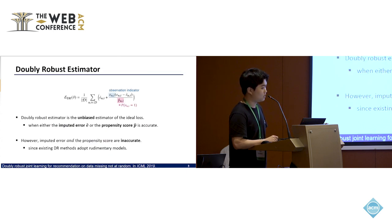So doubly robust estimator is one method for the remedy of this. It utilizes the observation indicator and the propensity p and the imputed error e. So if either the imputed error e or the propensity score p is accurate, the doubly robust estimator is the unbiased estimator of the ideal loss.